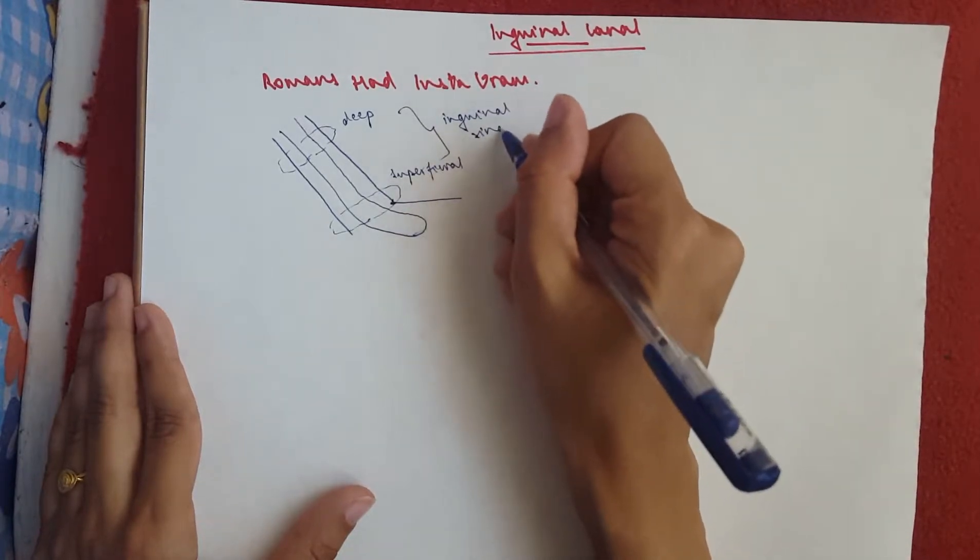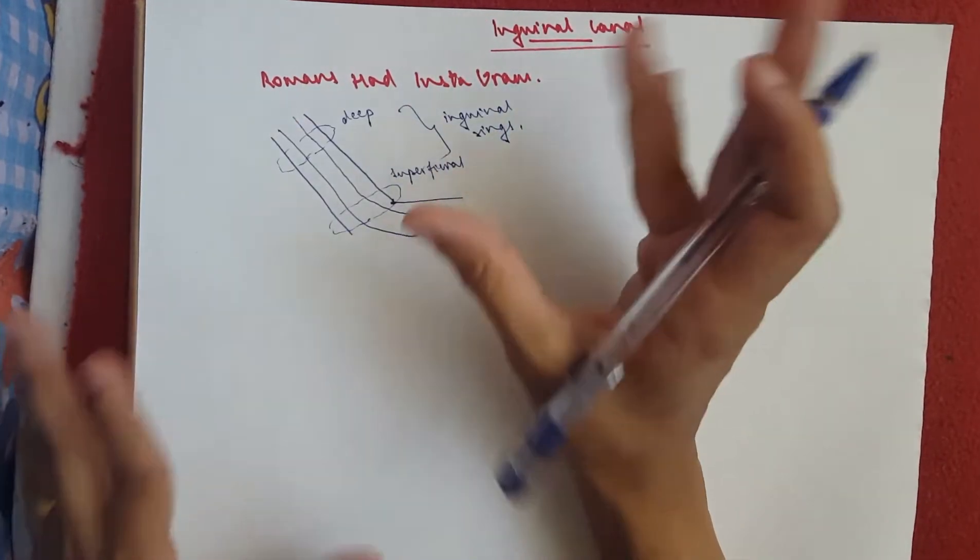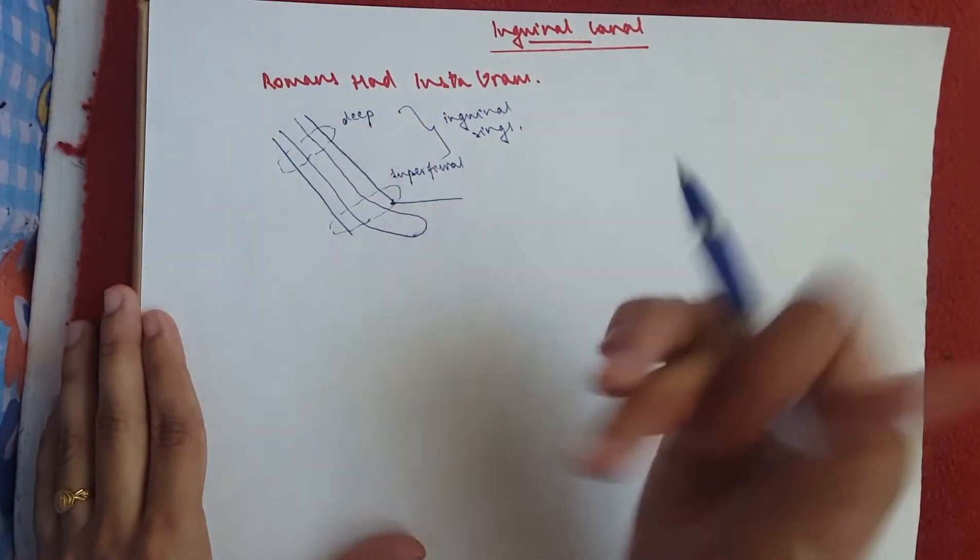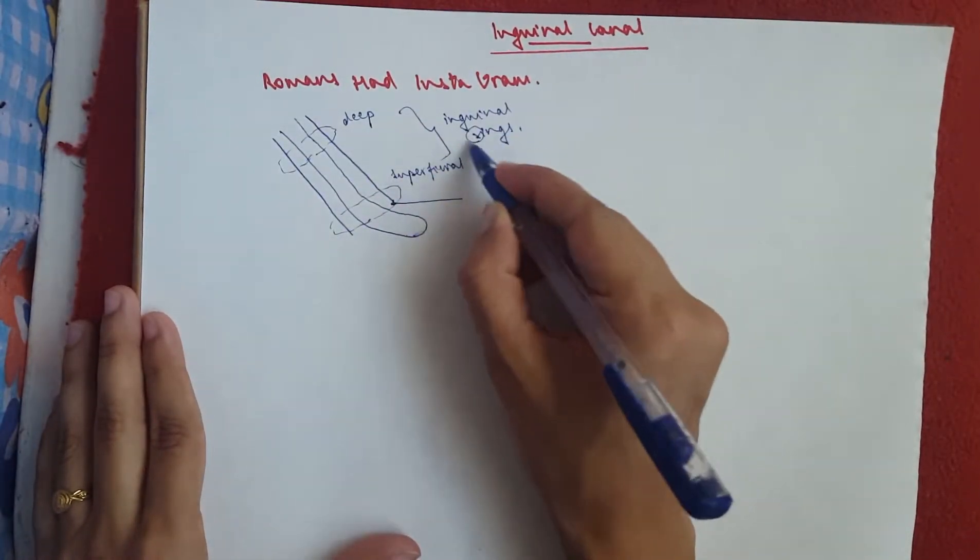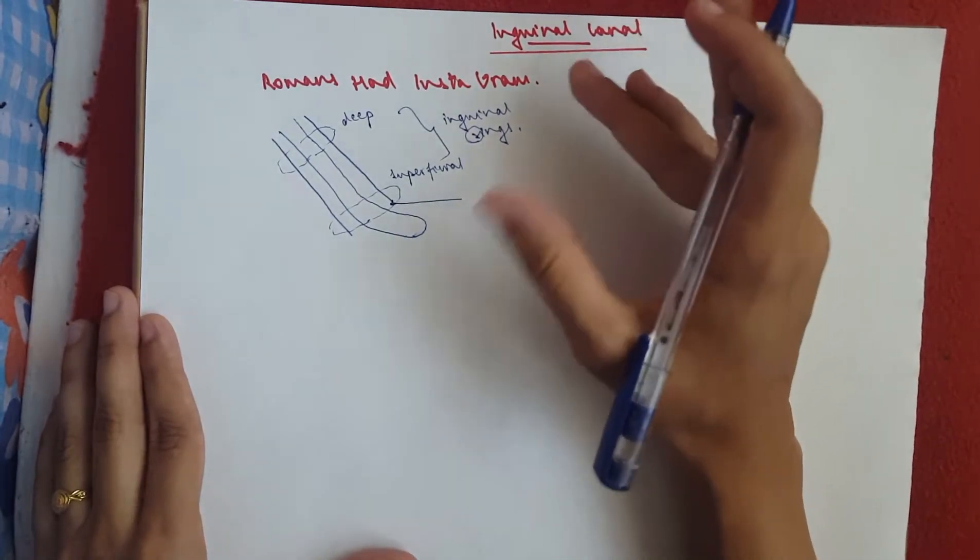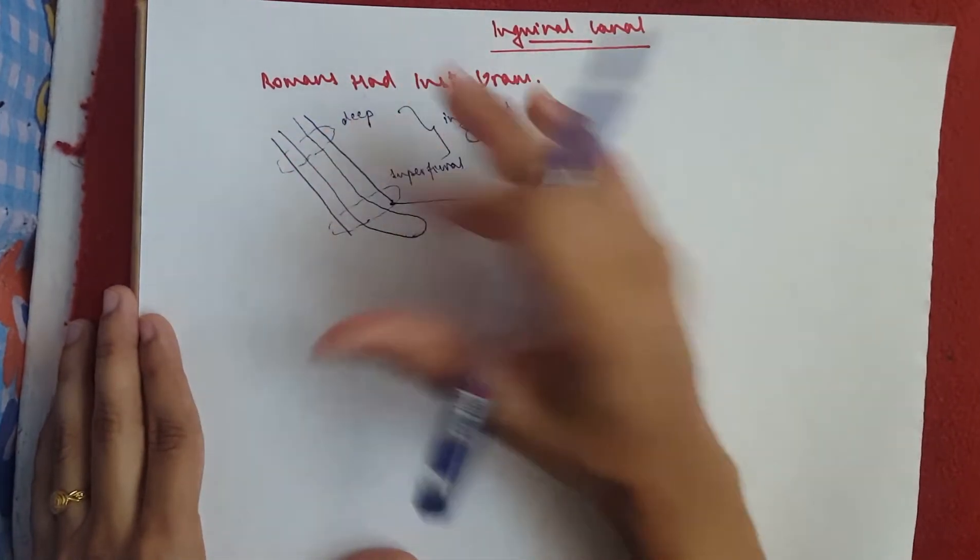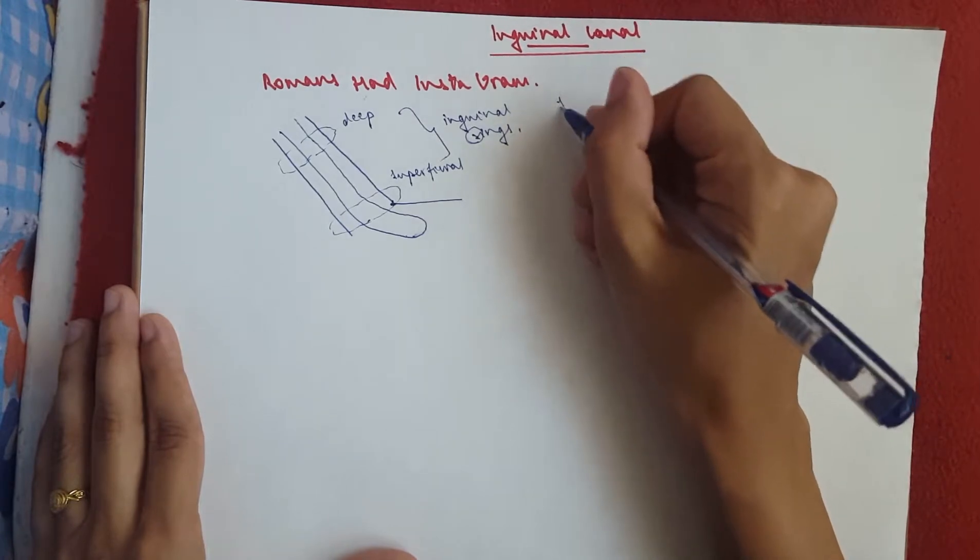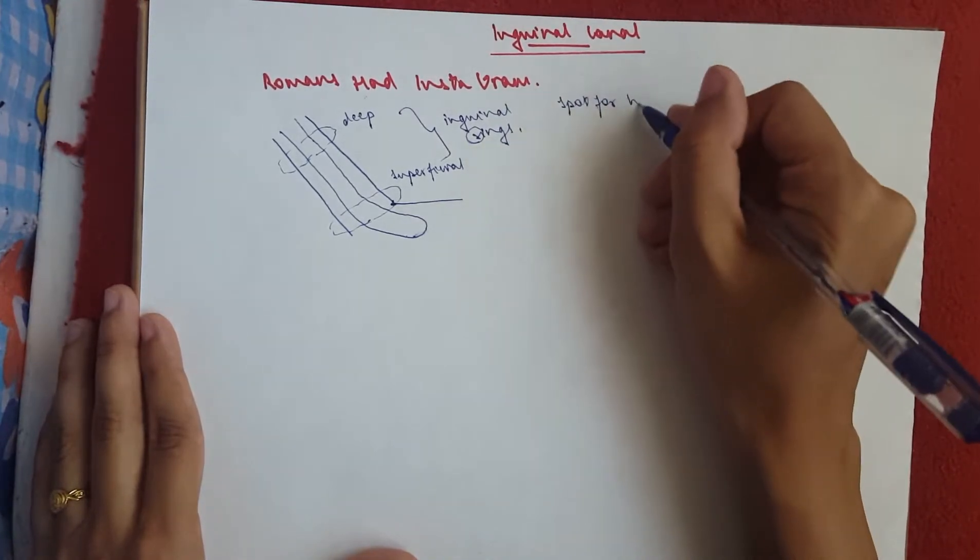Rings, I'm going to say. Okay, so in men, this is longer and larger. And this, now our rings, would be our R. And then we've got H, which means that this is a spot for hernia.